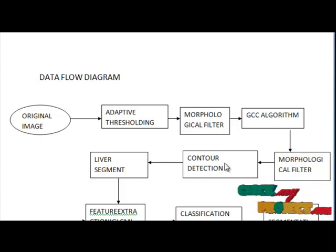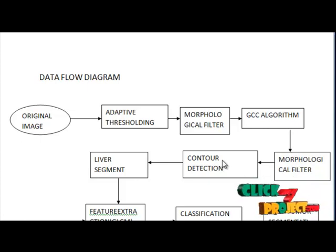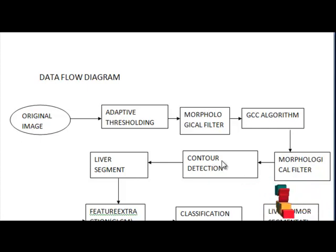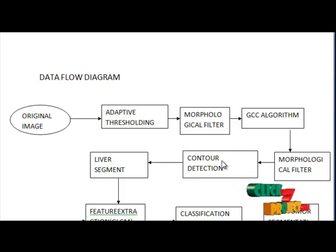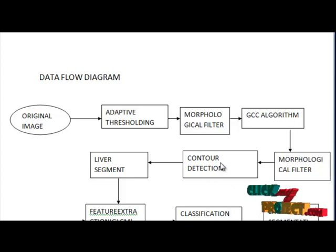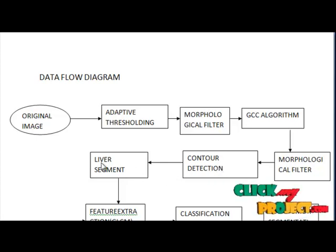The next step is contour deduction, which is performed by applying the non-linear filter of the Sobel method. The superposition of the contour on the original image allows us to delineate the region of the liver. The next step is liver segmentation.